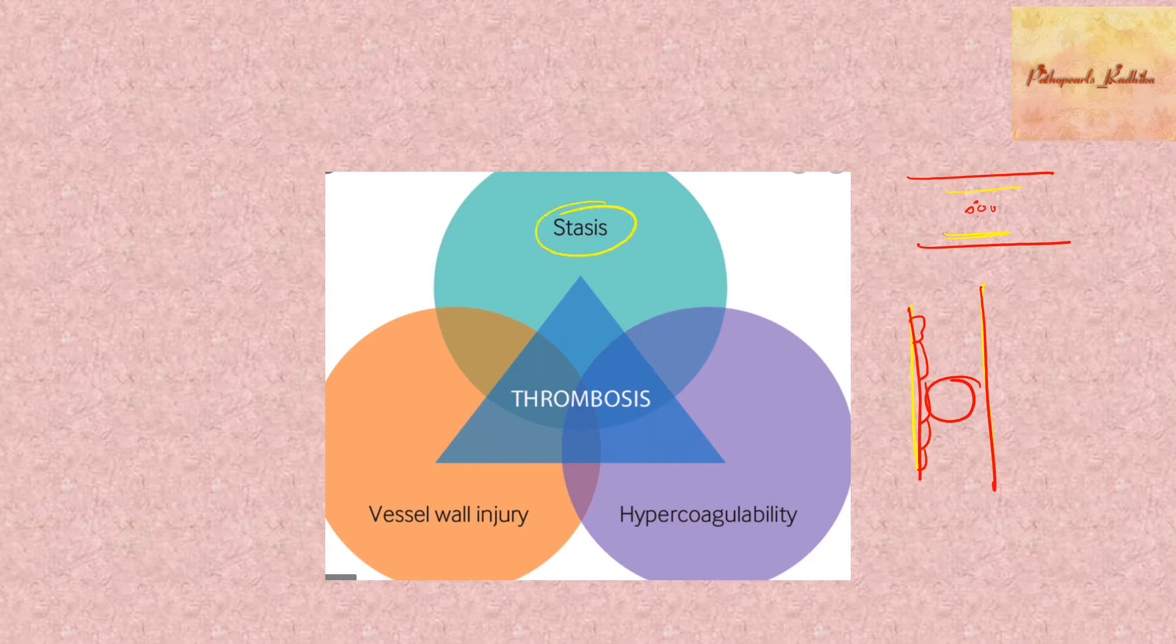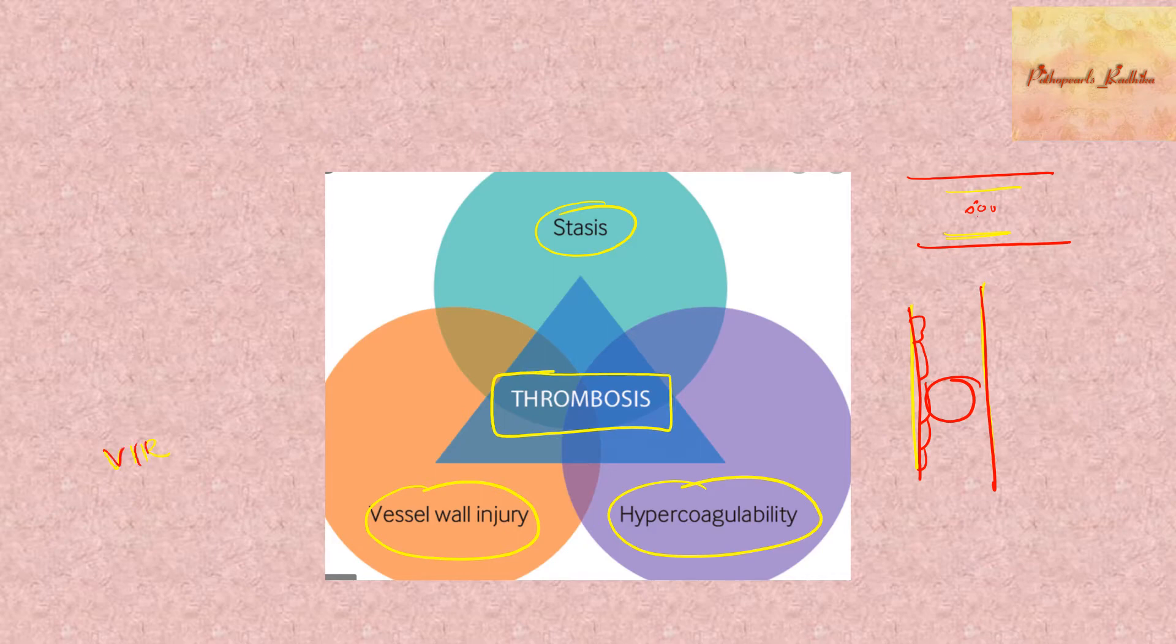What are the predisposing factors for thrombosis? So whenever you have stasis, any injury to the vessel wall or any hypercoagulable state, this can predispose to thrombus formation. This is what we call it as Virchow's triad.